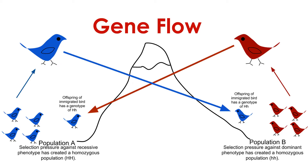Gene flow is evolutionary change in populations caused by the migration of individuals and the interbreeding of individuals from different populations. If an individual moves from one population to another, it may introduce its genetic material into that new population and cause it to evolve.